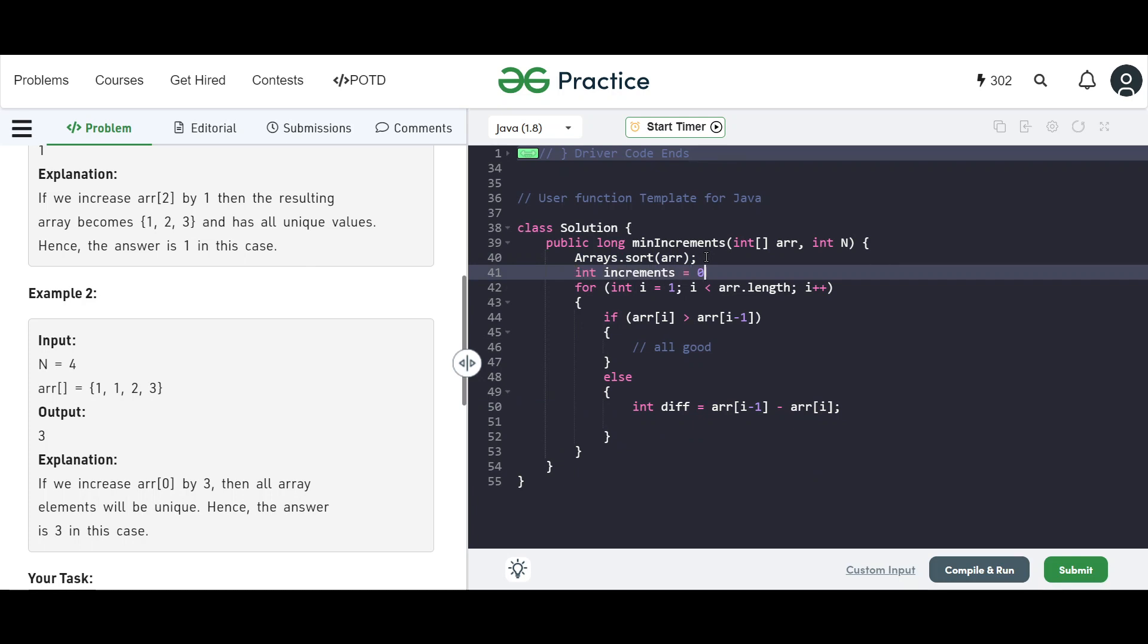And so int increments to zero. And now increments plus equals to diff plus one. And also change the value of array[i] plus equals to diff plus one, right?